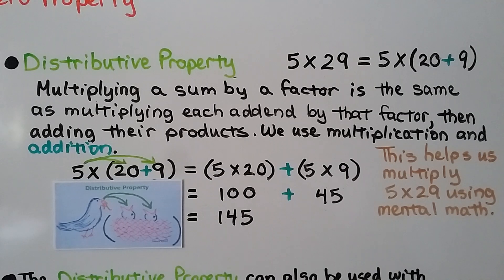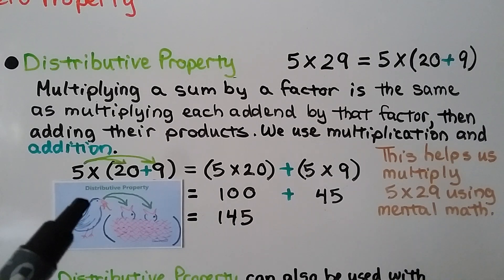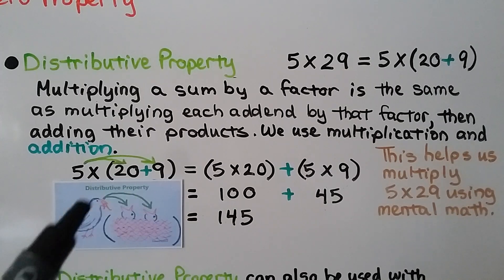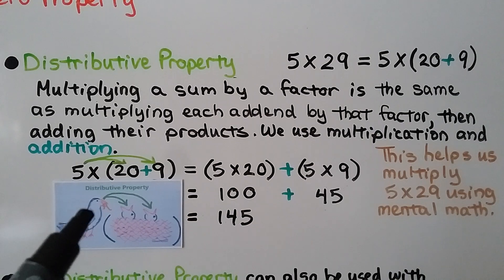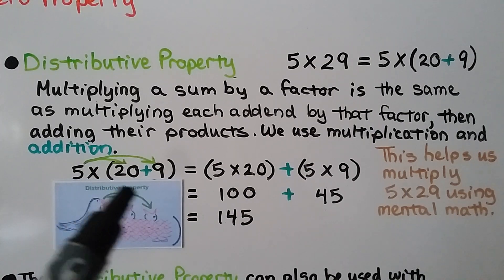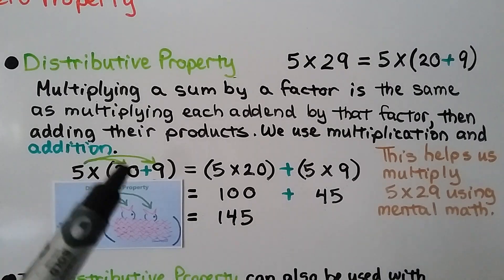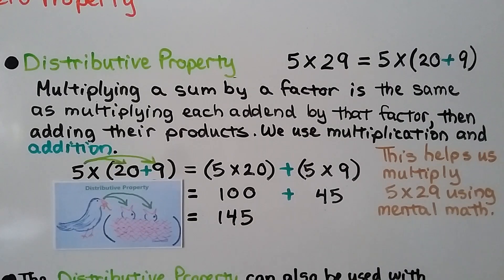This helps us multiply 5 times 29 using mental math — we didn't need paper and pencil. You can think of the distributive property as a mother bird trying to feed her little baby birds in a parentheses nest. She doesn't want one of them to go hungry, so she has to make sure each one gets fed. She can't ignore one — so the 5 has to go to the 20 and it has to go to the 9. We can't forget one of the addends.